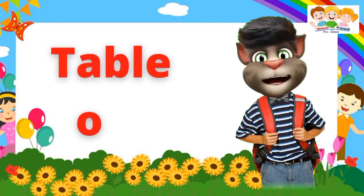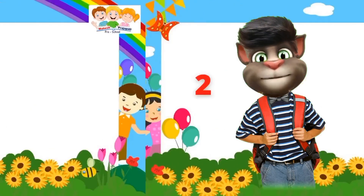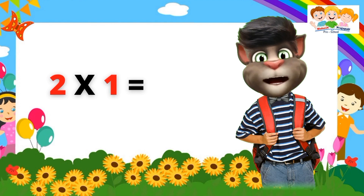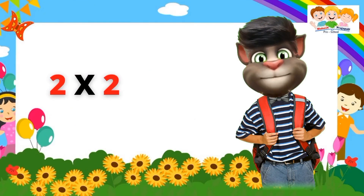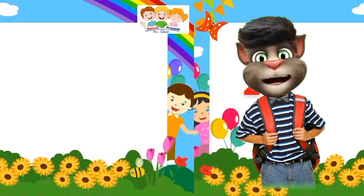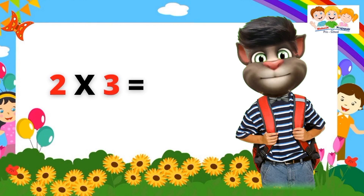Table of Two. Two ones are two. Two ones are two. Two twos are four. Two twos are four. Two threes are six.